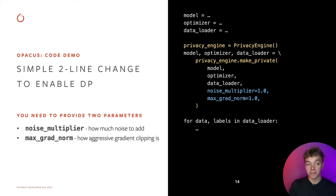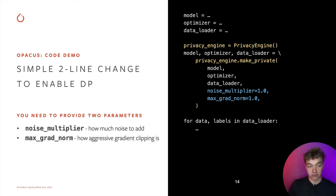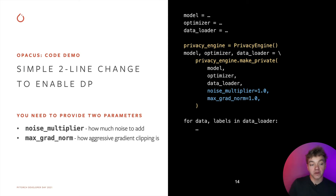Now let's look at a code example of how to use Opacus for your model. We start with a normal PyTorch training script shown in gray. You initialize your model, optimizer, and data loader, and then you create a privacy engine object — that's the main entry point to Opacus. Then you call the makePrivate method from the privacy engine, passing the model, optimizer, and data loader to it. After that, you can continue your training as you normally would with vanilla PyTorch. There are two required parameters: the noise multiplier, determining how much noise to add and therefore how private the model is, and max grad norm, controlling how aggressive the gradient clipping is.